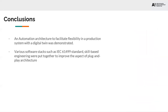Concluding this presentation, an automation architecture was presented in which the benefits of the skill-based system and the IEC 61499 standard were combined. A digital twin was used to test the control application via local control and via skill control. Various software stacks such as the IEC 61499 standard and skill-based engineering were put together to improve the aspects of plug-and-play architecture.